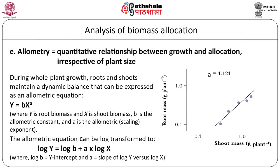Log transformation of the allometric equation gives a straight line, the slope of which is called the allometric coefficient (A) and the intercept represents the allometric constant. Any departure from a particular root and shoot relationship can be explained in terms of initial conditions — differences in intercept B — versus biomass partitioning during growth, i.e., differences in slope A. This relationship may apply to any other organ of the plant as well.